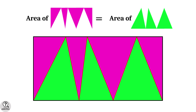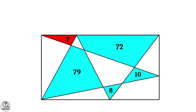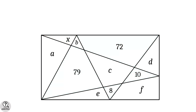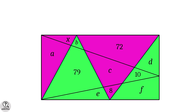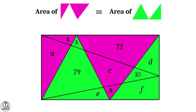Simply speaking, in a rectangle, any arbitrary set of zigzag lines splits the rectangle into two regions of equal area. Keeping this in mind, come back to the problem. Let the missing area be x, and denote the remaining parts as a, b, c, d, e, and f. Consider three lines — by the property, they split the rectangle into two regions of equal area. The total area of the pink region is a plus x plus 72 plus c plus 8, and the green region is b plus 79 plus e plus d plus 10 plus f.